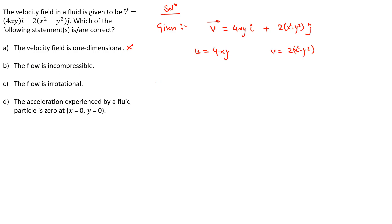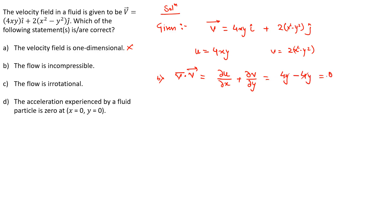To check Option B, let's compute the divergence of the velocity field: ∂u/∂x + ∂v/∂y. This becomes 4y + (-4y) = 0. Since the divergence is zero, the flow is incompressible. Thus Option B is correct.